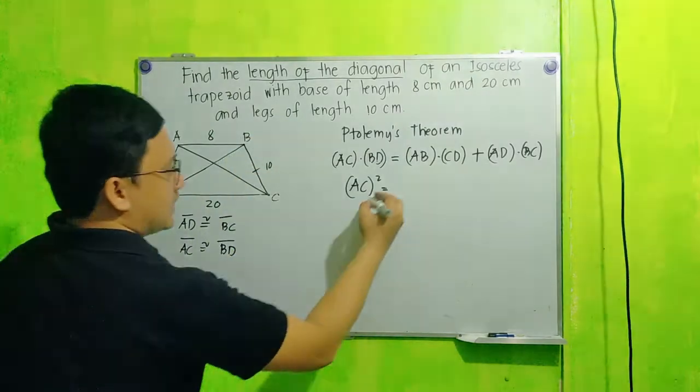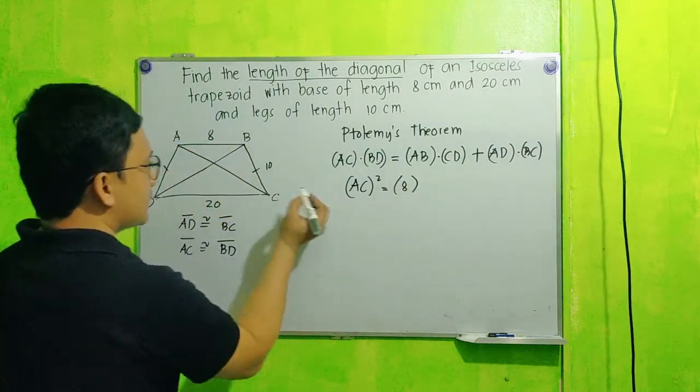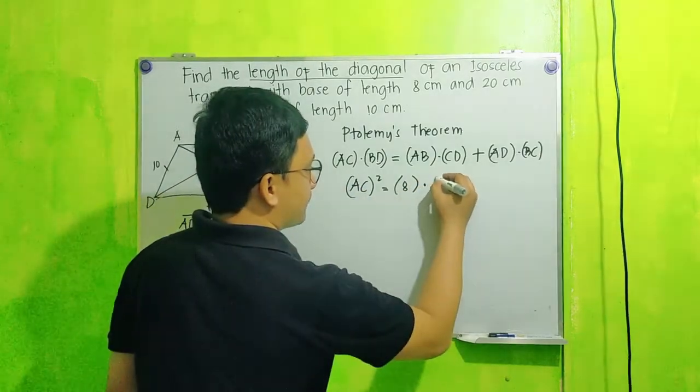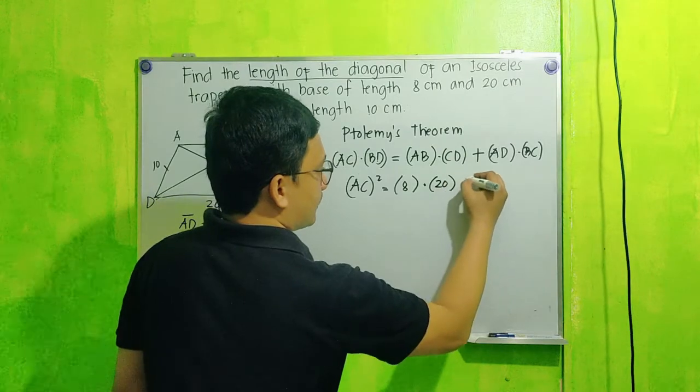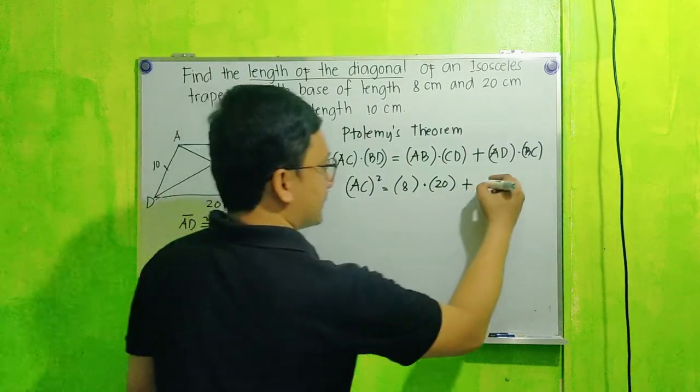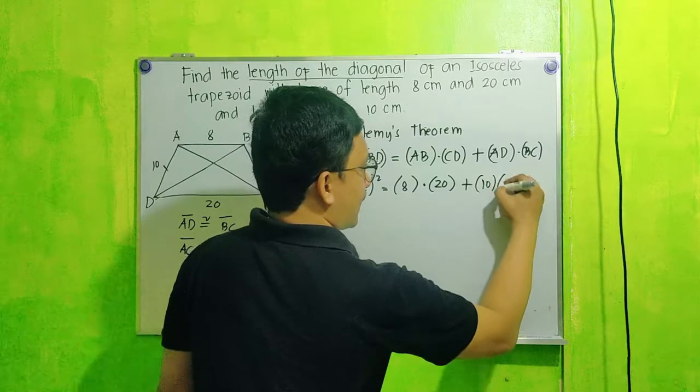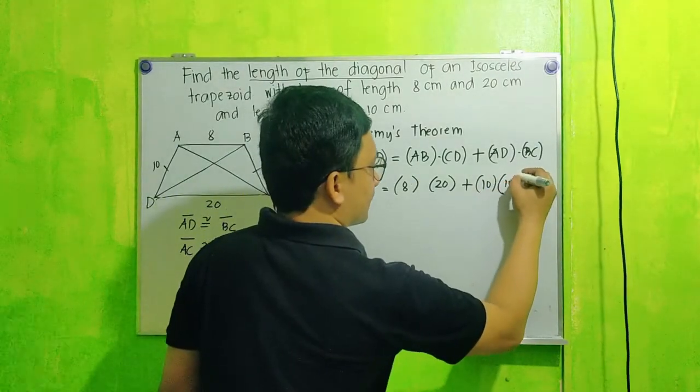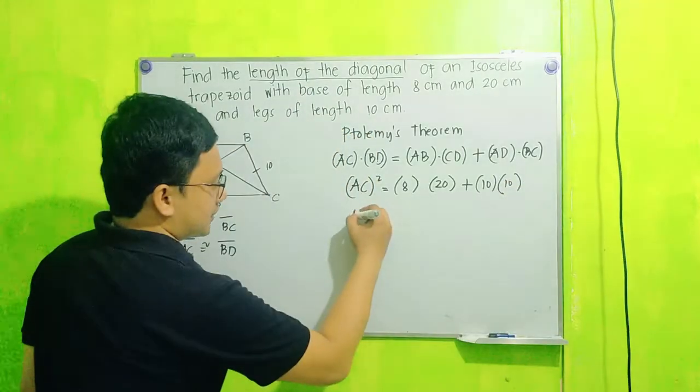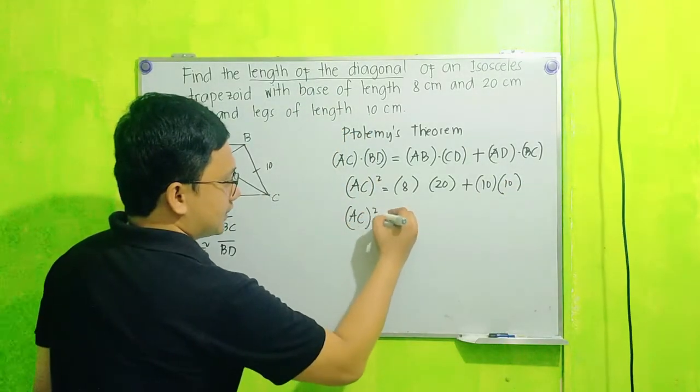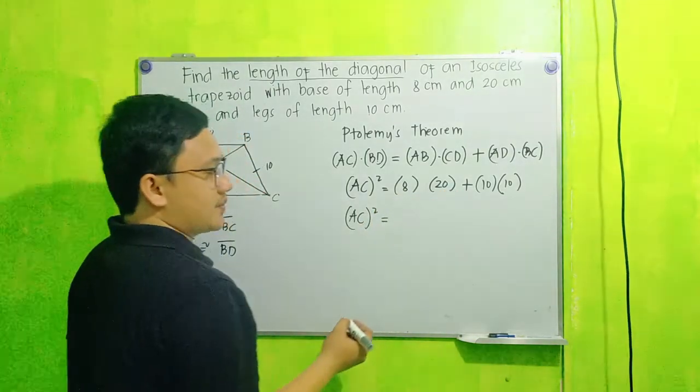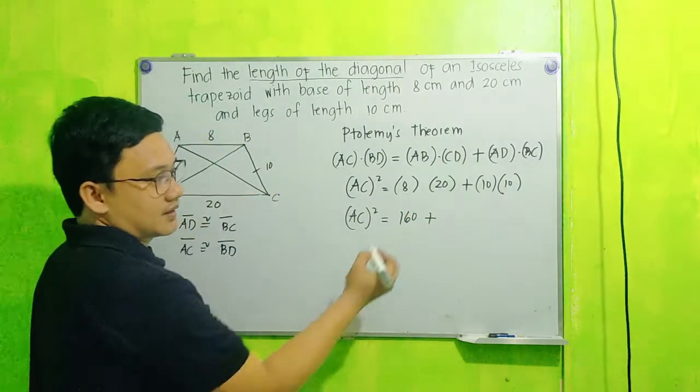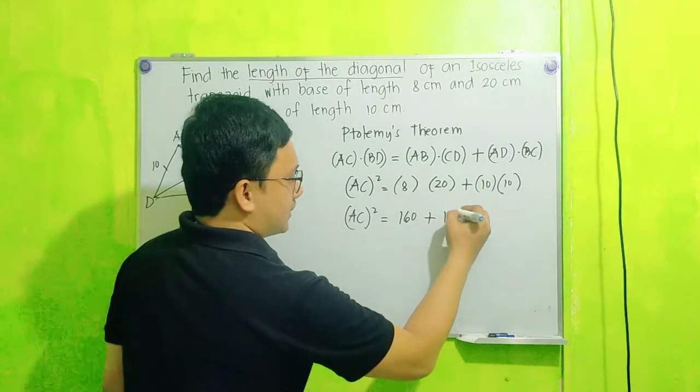Is equal to, since ang AB natin is 8, substitute na natin, and then CD natin that is 20, so times 20, plus ang AD natin is 10 times ang BC natin that is 10. Simplify natin yan, so this is square of AC is equal to 8 times 20 that is 160, plus 10 times 10 that is 100.